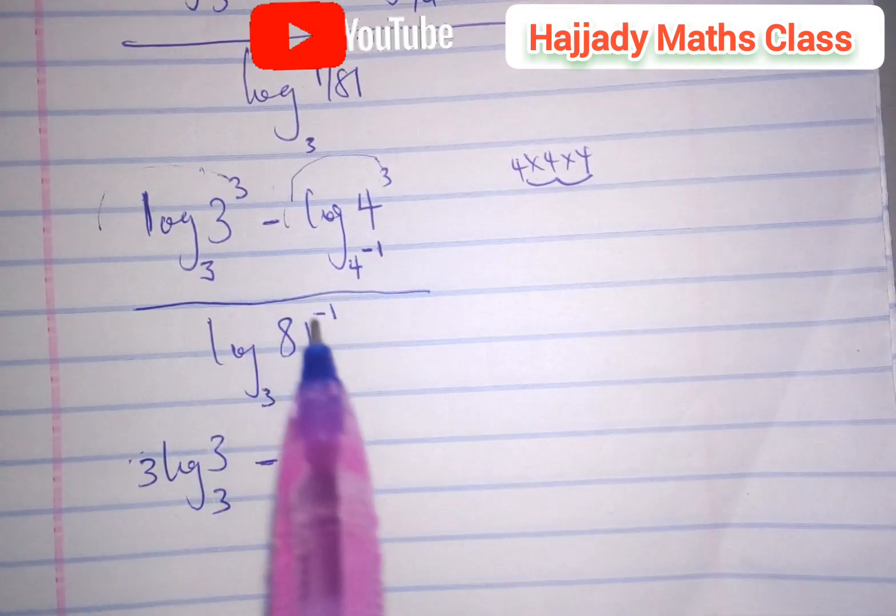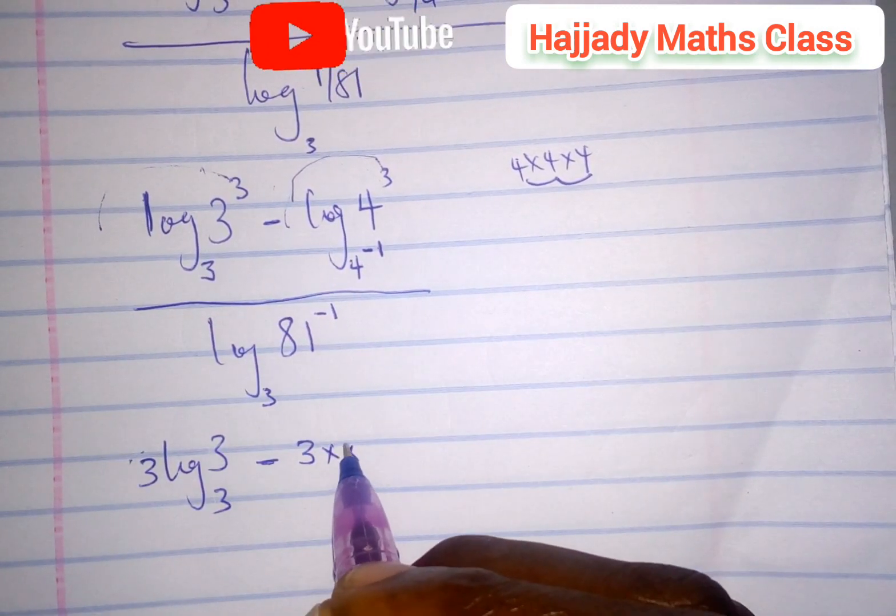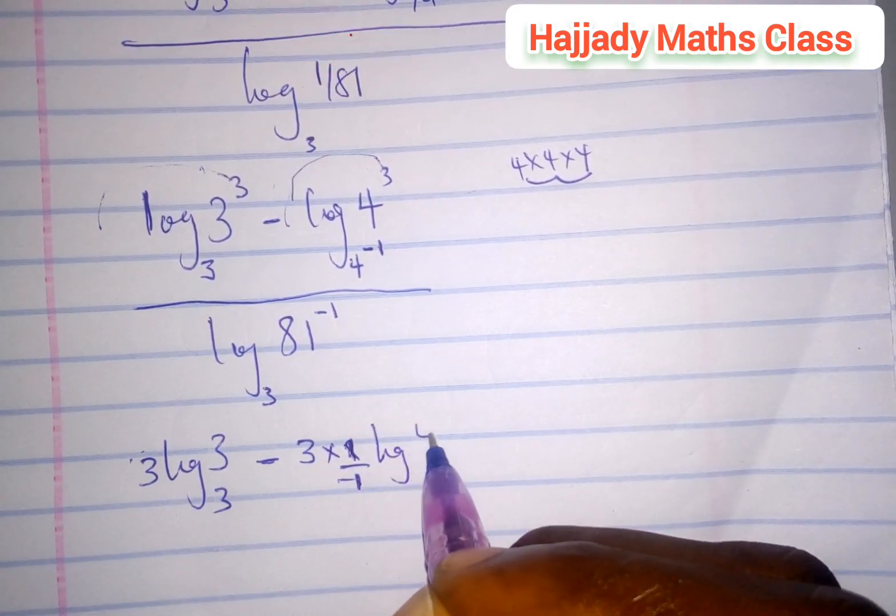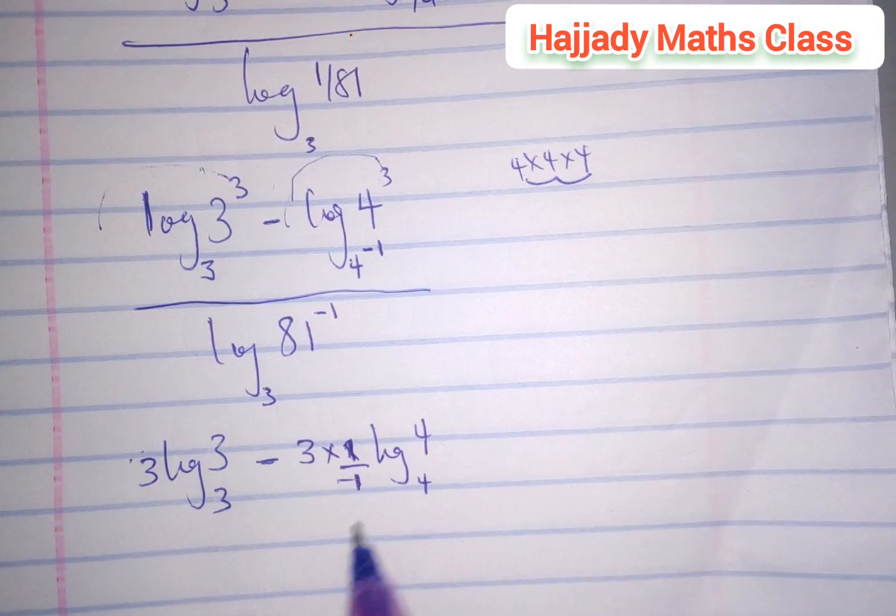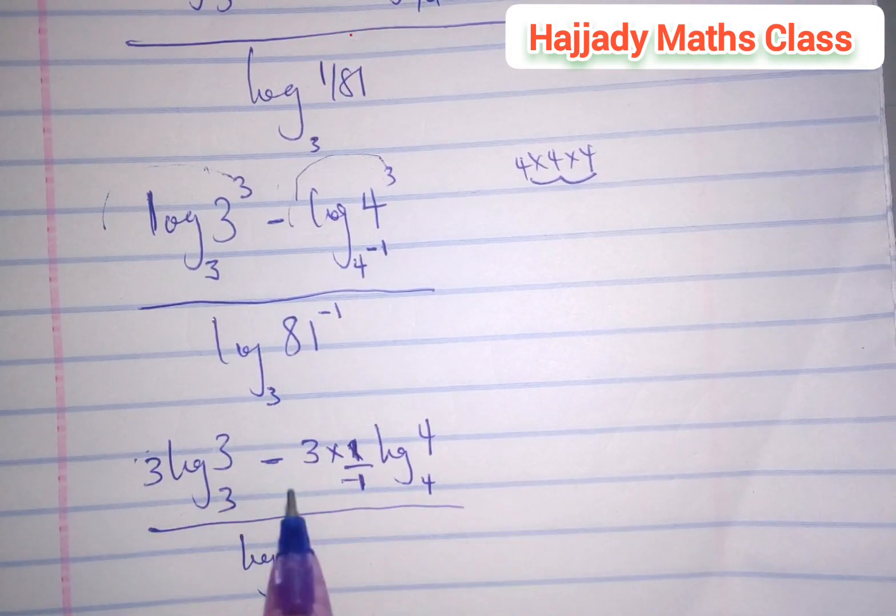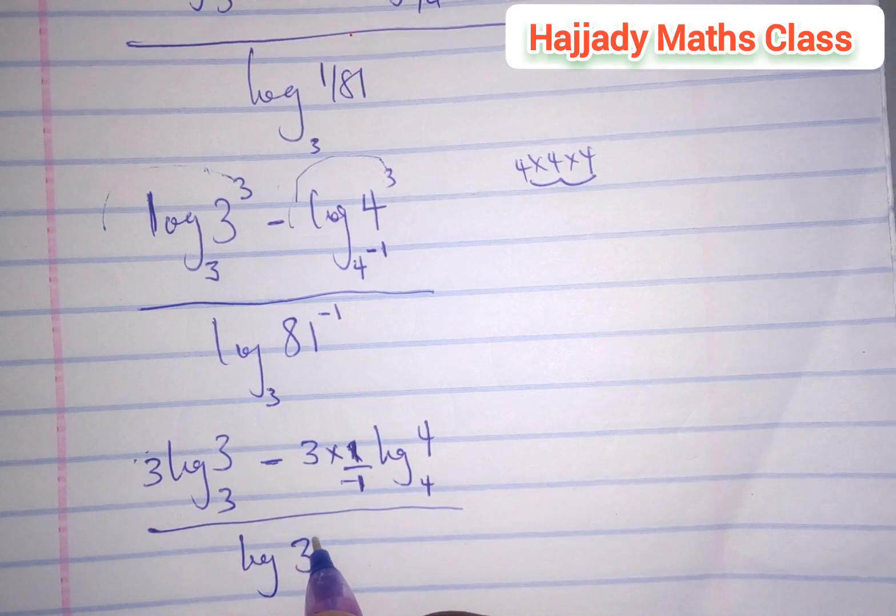Log 4 base 4, all over log 81, can be written as 3 raised to power 4, which is 3 times 3 times 3, base 3.